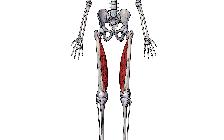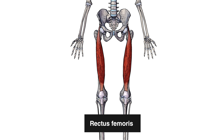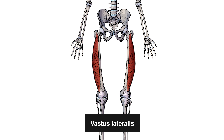Here we can see the vastus medialis muscle. The vastus medialis is one of the four quadricep muscles. The other three are the vastus intermedius, the rectus femoris, and the vastus lateralis.